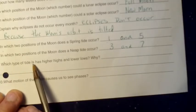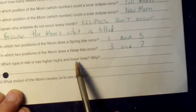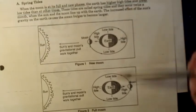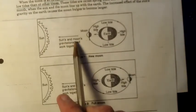Number nine, which type of tide has higher highs and lower lows? Why? We learned that spring tides have higher high tides and lower low tides because the sun and moon's gravitational pull work together.